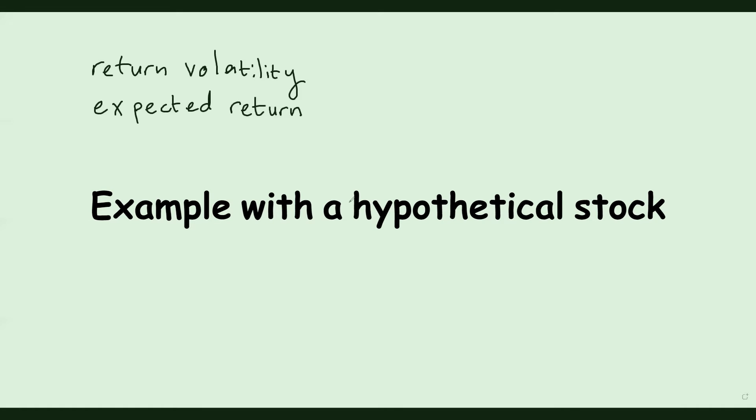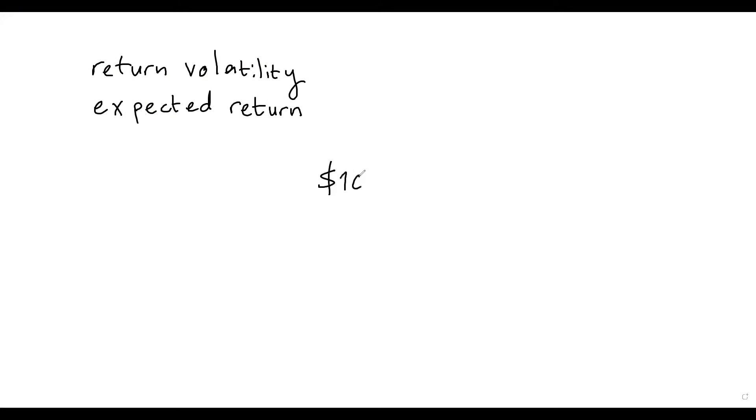So just to go back to the previous example, when we discussed expected returns, we talked about a stock which has a price of $100 today, which could go up to either $120 in a year's time or down to $90 with equal probability, 0.5 probability.